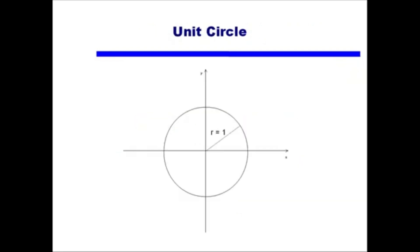Let's start off with the unit circle. A unit circle is simply a circle with radius 1. Let's pick a point on this unit circle and call it x comma y — that is, we move over to the right x units and up y units, leading to the point x comma y.